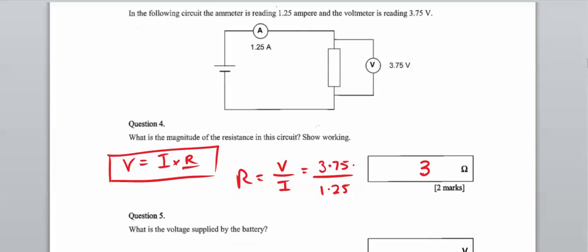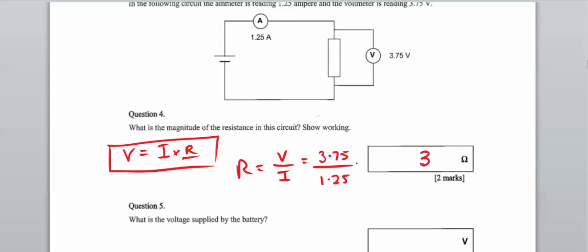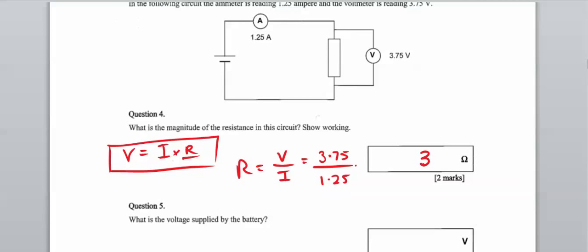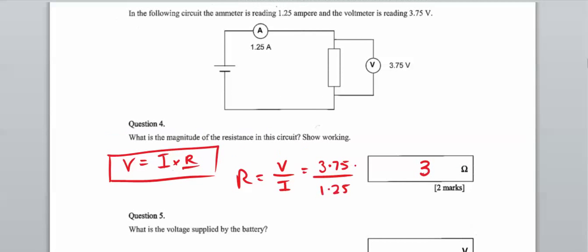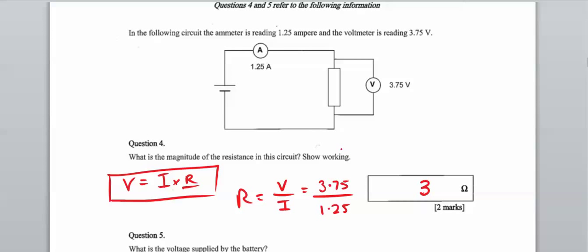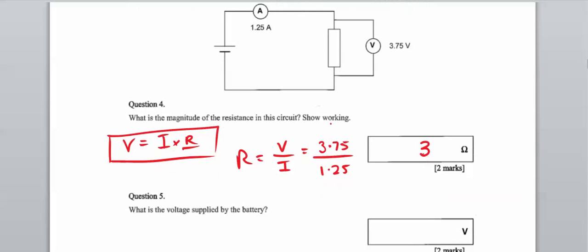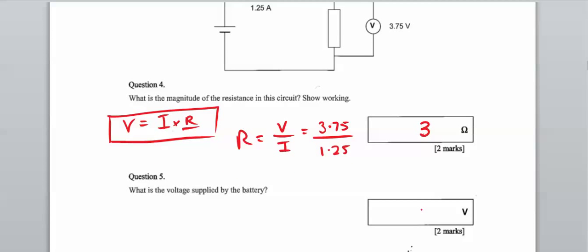What is the voltage supplied by the battery? All of the voltage supplied by the battery is going directly through that resistor, so it appears that the voltage supplied by the battery is 3.75 volts. Quite a simple question, really.